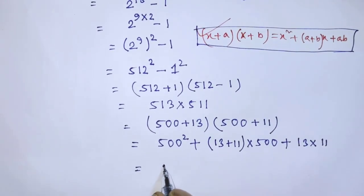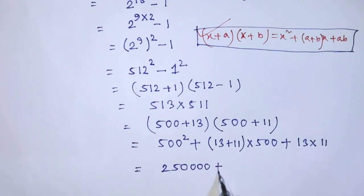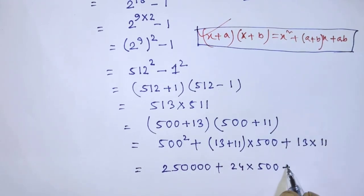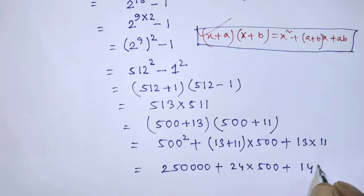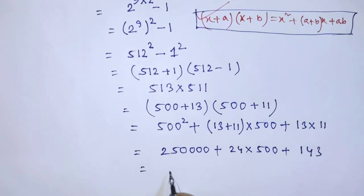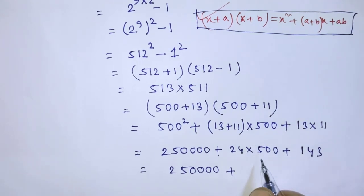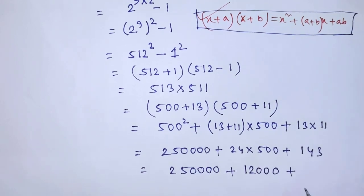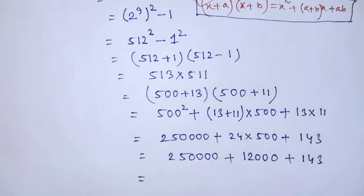So guys, it will be 250,000 plus 24 times 500 plus 143. After that it will be 250,000 plus if you multiply these both numbers then you get 12,000 plus 143. So guys if you add these three numbers then you get 262,143.